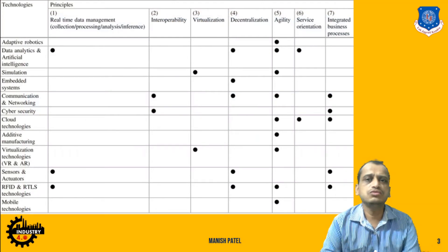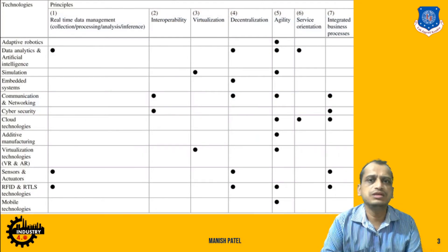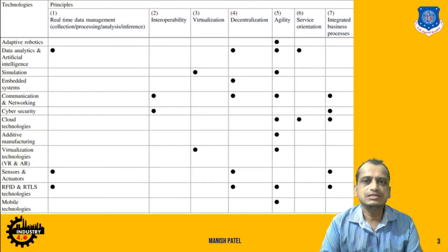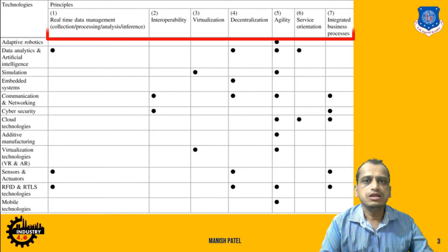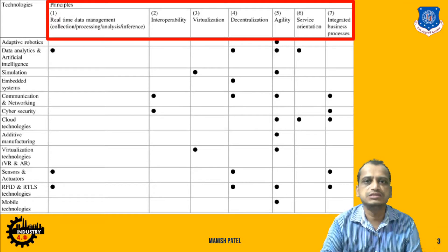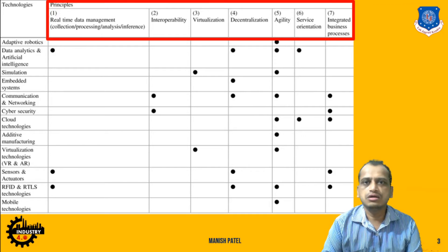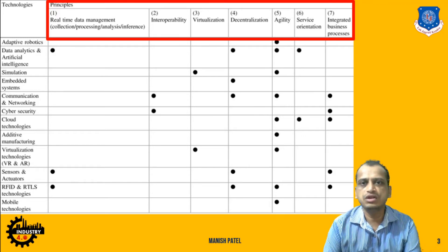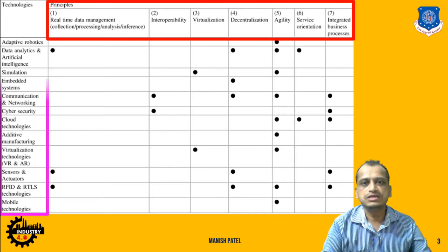Next, let's look into the impact of design principles. The top row shows a comprehensive list of design principles. This chart suggests a concurrence of design principles as well as supportive technologies.